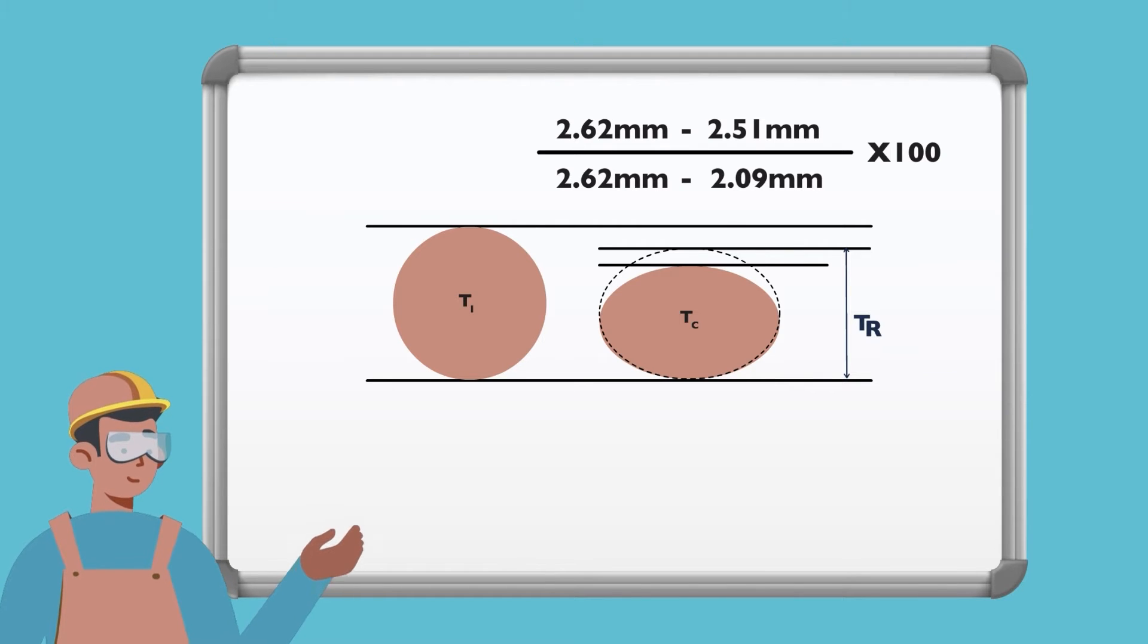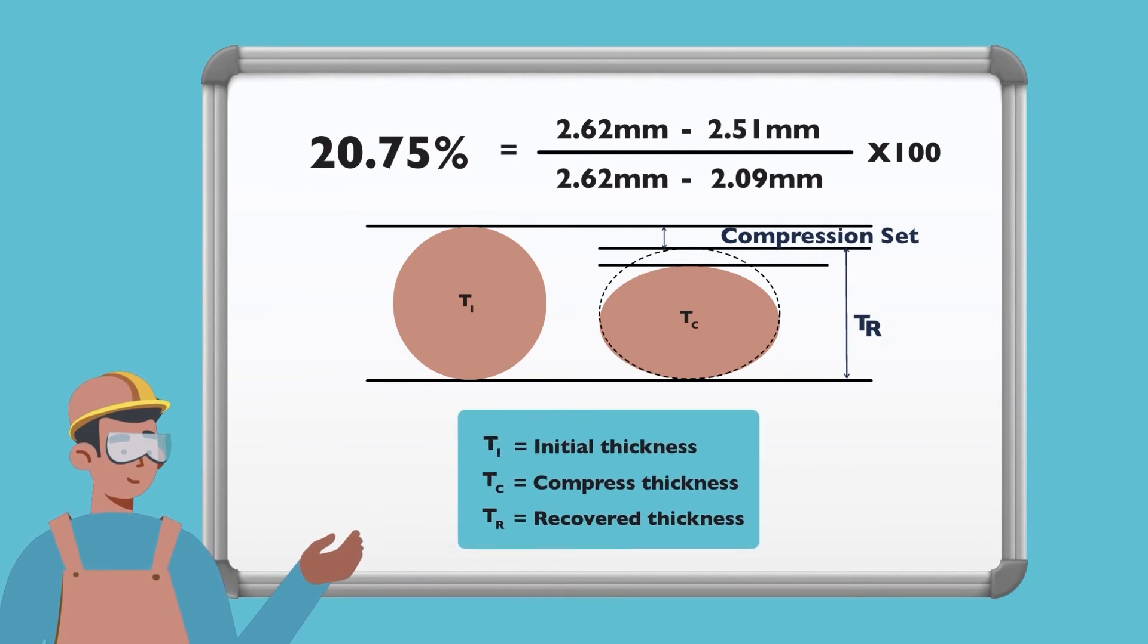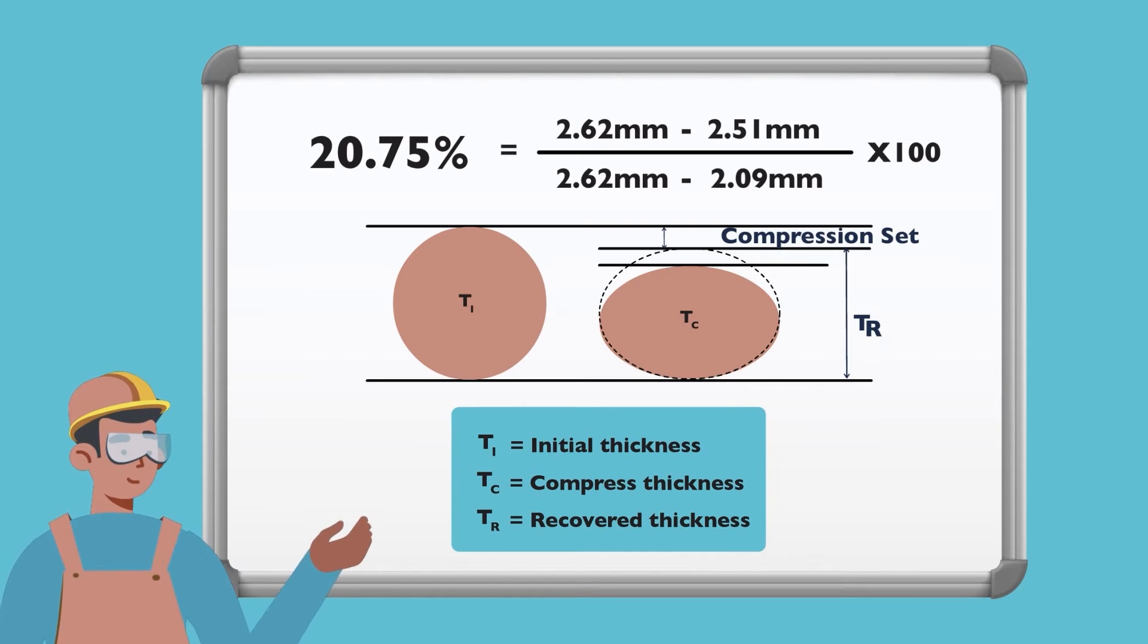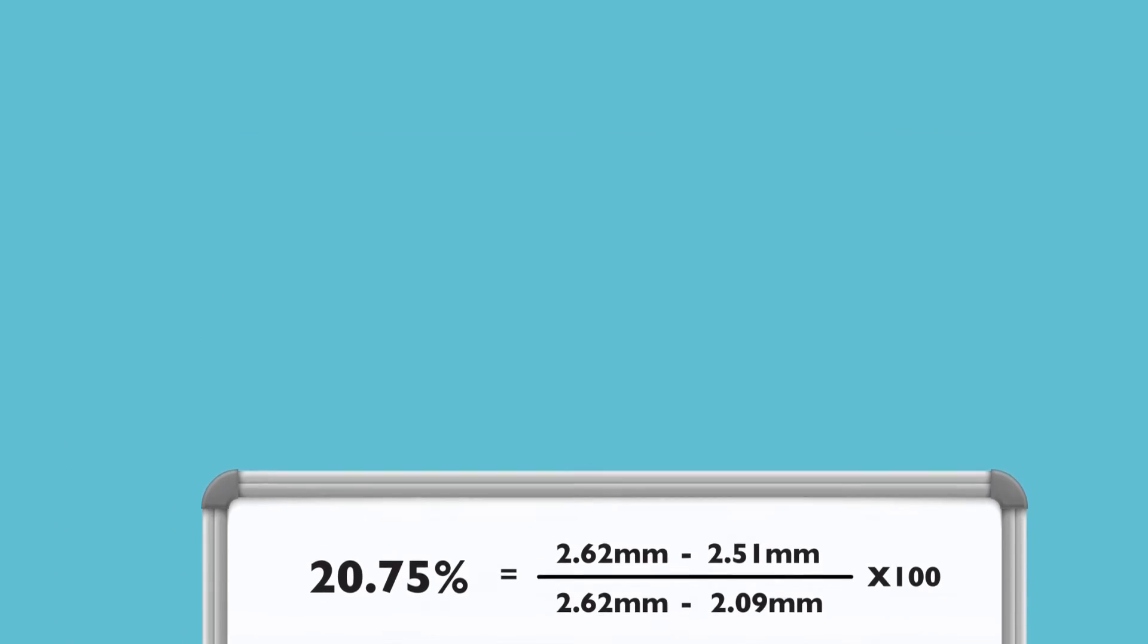When we add these values into the compression set formula, we get a value of 20.75%. It is important to remember that elastomer button samples are used in these tests. Repeating the test with the same material but in an O-ring profile will likely produce different values for compression set.